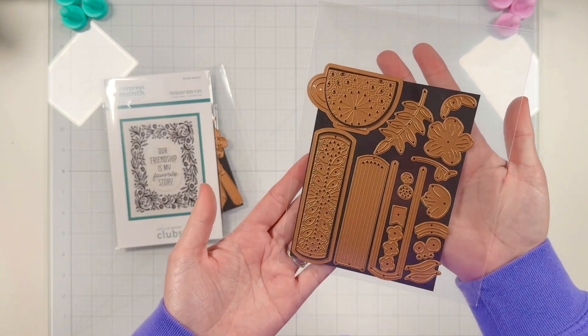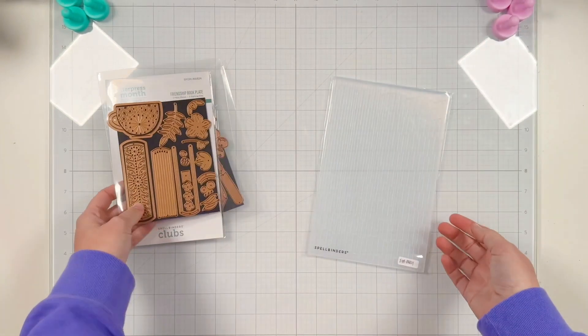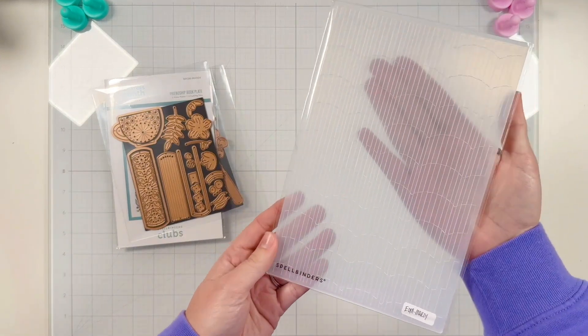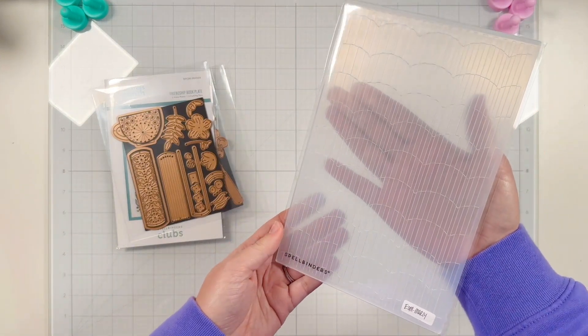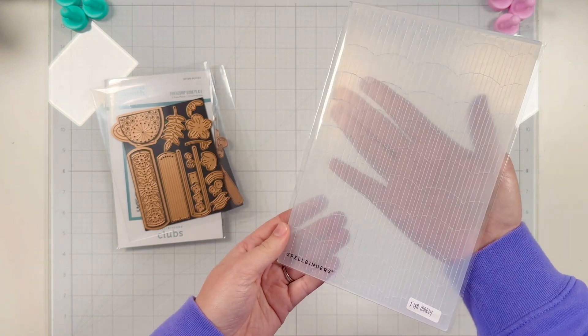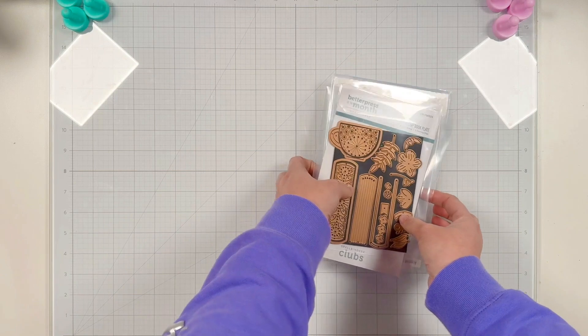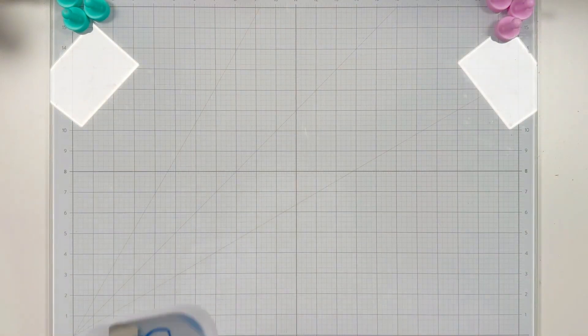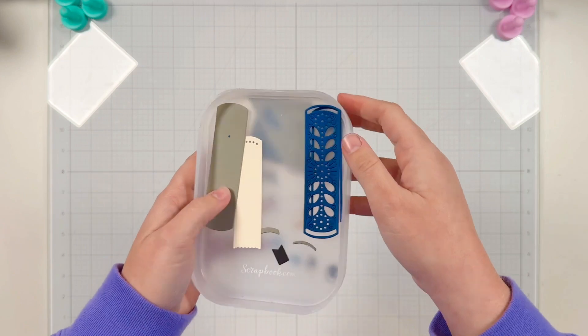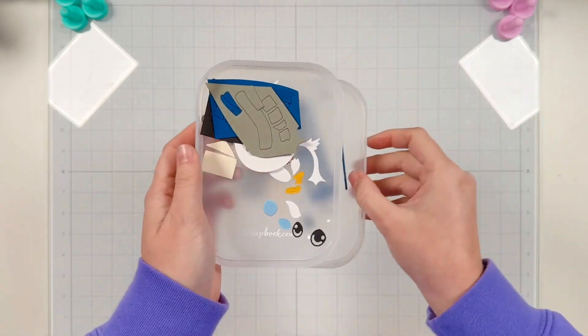I will not be using this particular product for today's project, so check back later this month for that. And finally, I have the stitching die of the month with adorable books, teacup, and floral details. Oh, also new, I am on the embossing folder of the month, which I'm so excited. I love their standard embossing folders. They're all 3D, but it's the more standard embossing folder. So, so excited to have more to show you today.